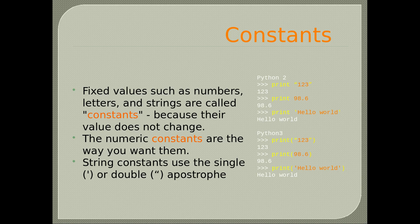For example, writing print('123') in double apostrophes will result in the number 123 displayed on the screen. Writing print(98.6) will result in 98.6, while writing print('Hello World') will result in the text Hello World on the screen. These examples are for Python 2. In Python 3, you need to write print, then open parentheses, write the value, and close the parentheses.